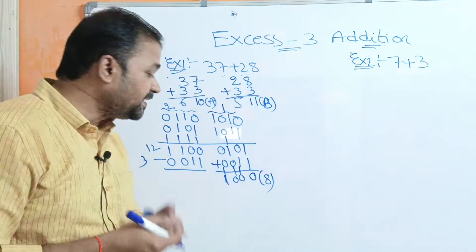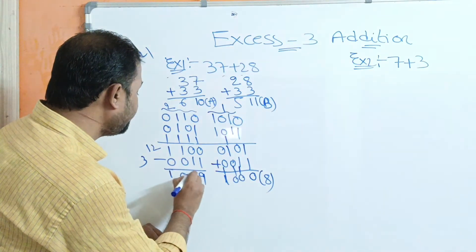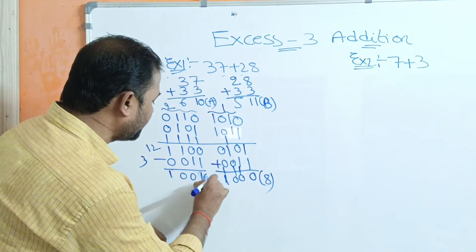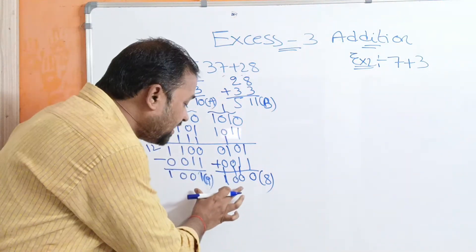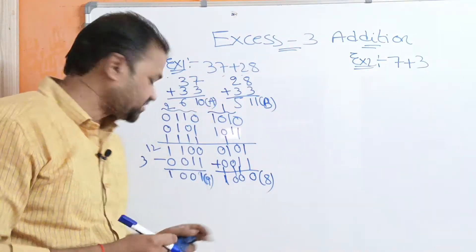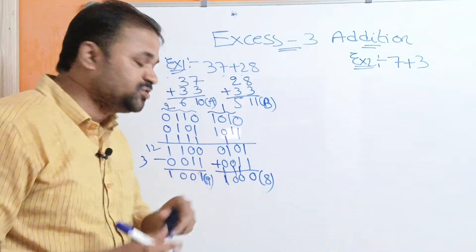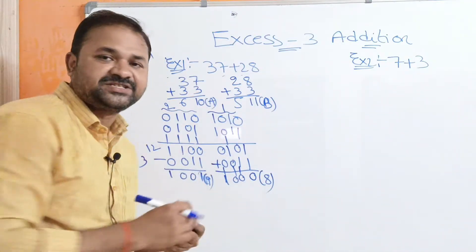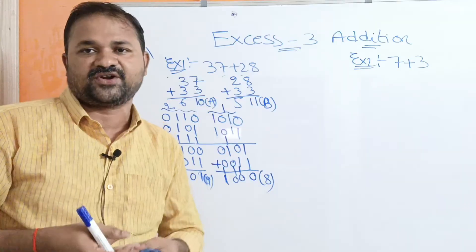9 in binary notation is 1001. So this is the result after adding the two XS3 numbers: 1001 1000. Now let us cross-verify whether our result is correct.